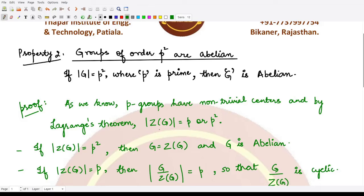...because from the proof of the last video, you saw that the order of Z(G) is either p or p². So if the order of the center of G is p²...